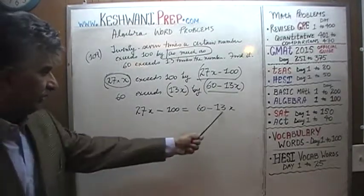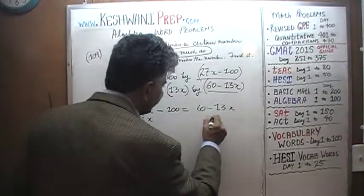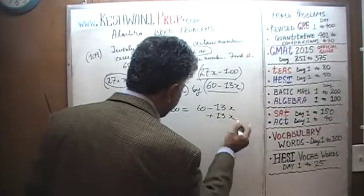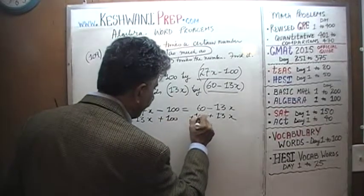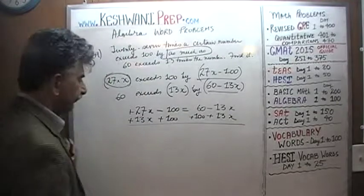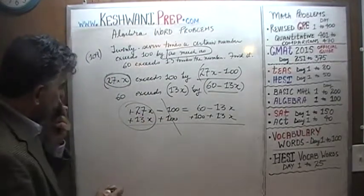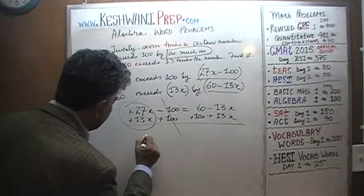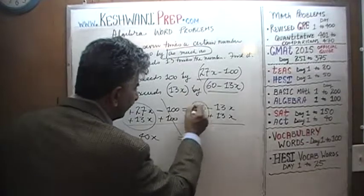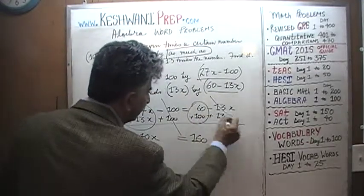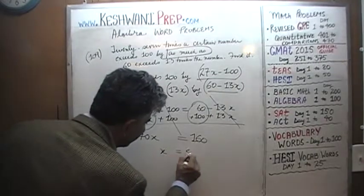Let's add 13X to both sides, then add 100 to both sides. 27X plus 13X gives 40X, and 60 plus 100 is 160. So 40X equals 160, which implies X equals 4.